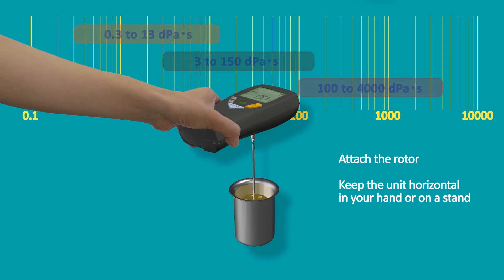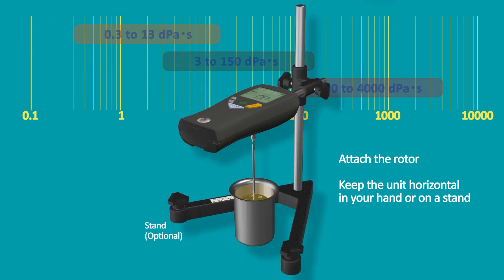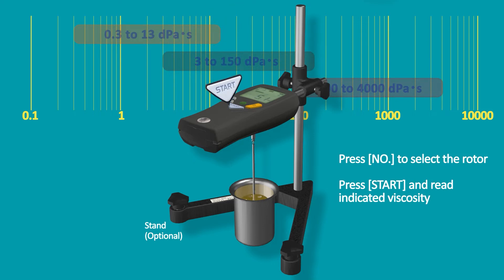Attach the rotor. Keep the unit horizontal in your hand or on a stand. Press number to select the rotor. Press start and read the indicated viscosity.